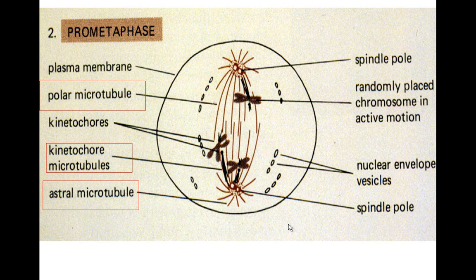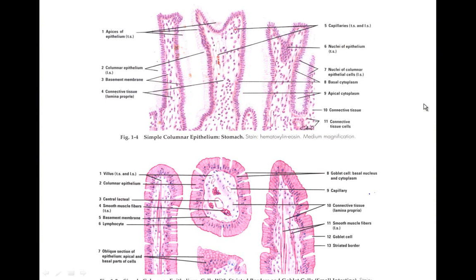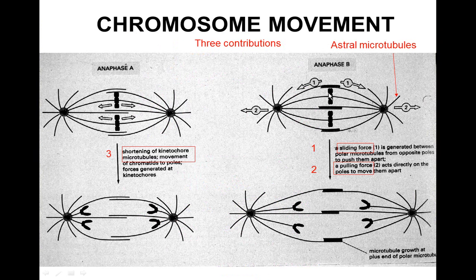There are three groups of microtubules involved. The polar microtubules push the poles apart. You have the aster microtubules that pull the different poles apart and stretch out the cell. And then you have the kinetochore microtubules that are attached to the chromosome that shorten - to pull the chromosomes to the different poles. So the aster microtubules pull out, the polar microtubules push, and the kinetochore microtubules shorten.